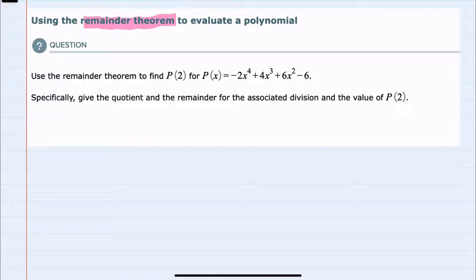So I'll start by just stating what the remainder theorem says. It says that if you have some polynomial p of x and you divide that polynomial by x minus some constant c, then your remainder from that division will be the same as if you would have plugged c into the polynomial itself.